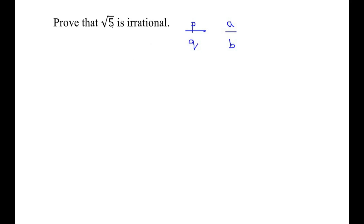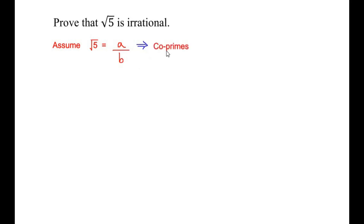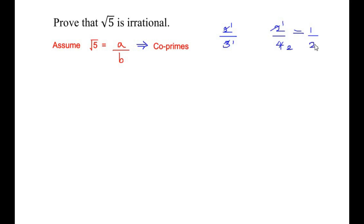Now let us consider that square root of 5 is rational, and contradict this statement. So assume square root of 5 is equal to a over b, which is in rational form. Another condition is that a and b have to be co-primes — co-primes are numbers which have just 1 as their highest common factor. For example, 2 over 3 cannot be divided further, but 2 over 4 is not a co-prime pair; we reduce it to 1 over 2. So we must ensure that a and b are the simplest fraction form.